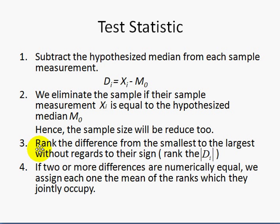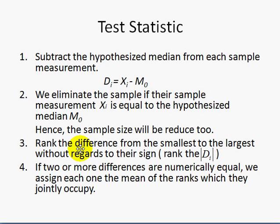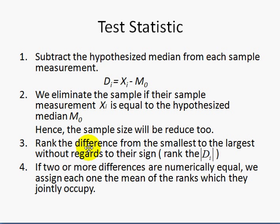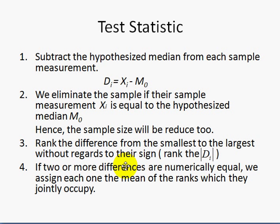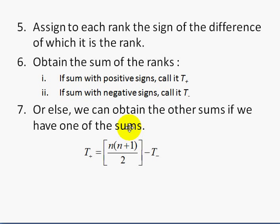Third, we rank the differences from the smallest to the largest without regard to their sign — in other words, we rank the absolute values of the differences. If two or more differences are numerically equal, we assign each one the mean of the ranks which they jointly occupy. Next, we assign to each rank the sign of the difference for which it is ranked. After that, we obtain the sum of the ranks. If the sum has a positive sign, we call it T-positive; if the sum has a negative sign, we call it T-negative. We can also obtain the other sum if we have one of them, using the formula: T-positive equals N times (N plus 1) divided by 2, minus T-negative.